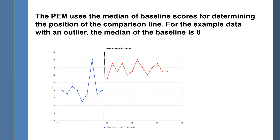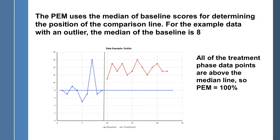I'm going to do some side-by-side comparisons. The PEM — percentage exceeding the median — uses the median of the baseline scores for determining the position of the comparison line. For the example of this data set with an outlier, the median would be 8. When we place our horizontal line at 8 for comparison, 100% of the treatment phase data points are higher than that line. So with a single outlier, the PND comes out to be 0% — indicating no effectiveness — whereas the PEM comes out to be 100%. There's a huge difference.